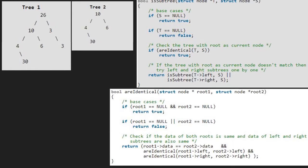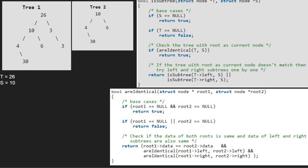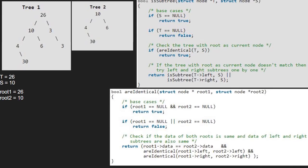We pass the root node of tree1 and tree2 into function isSubtree. So, T will point to 26 and S will point to 10. Since both are not null, we call the areIdentical function with T and S. Now in the areIdentical function, root1 will point to 26 and root2 will point to 10. Since root1's data is not equal to root2's data, we return false to function isSubtree.